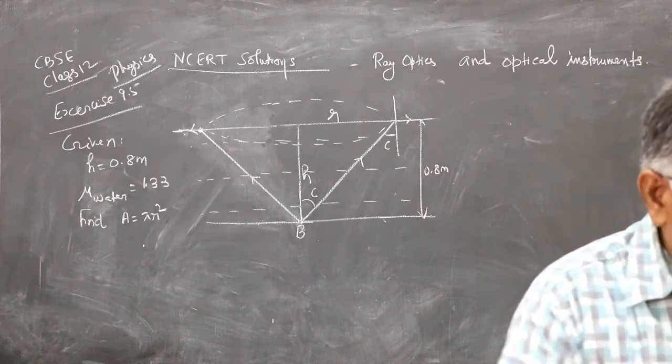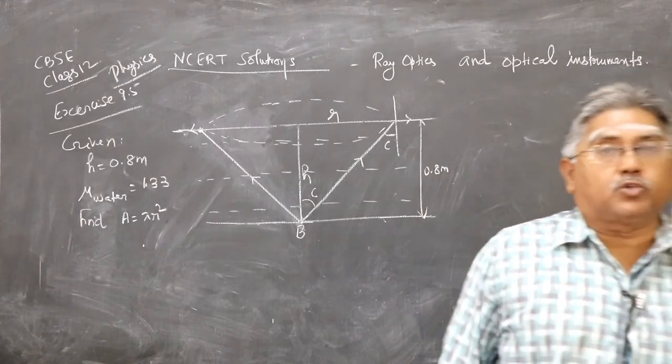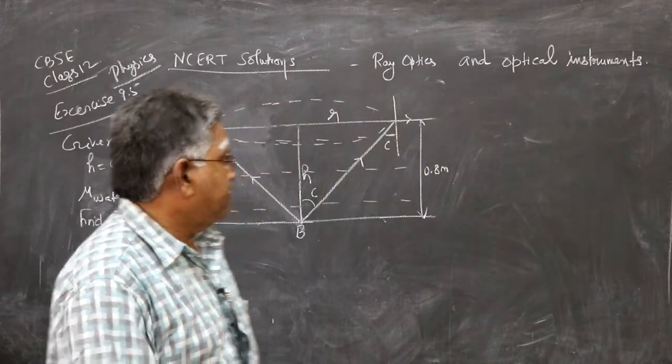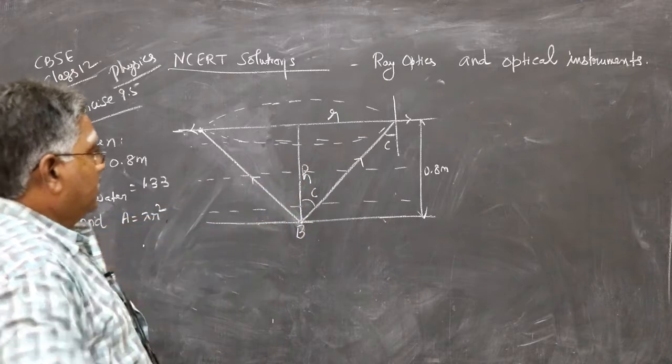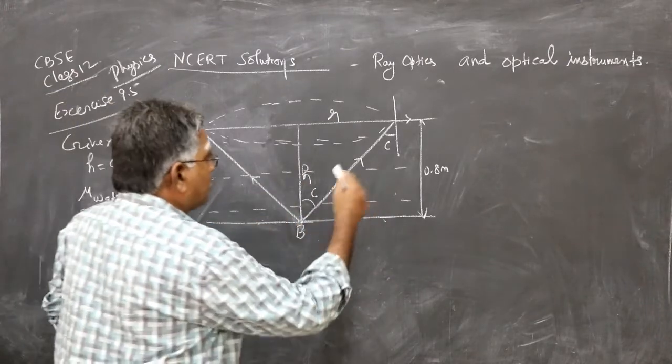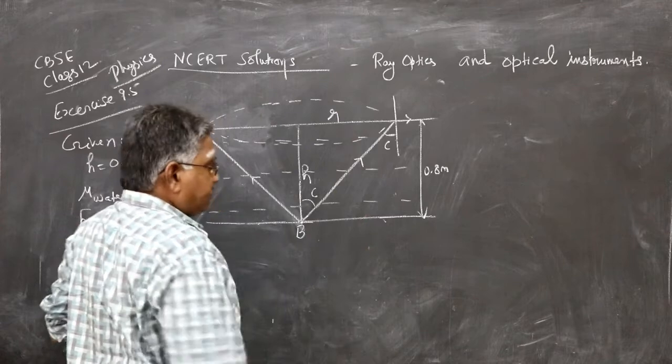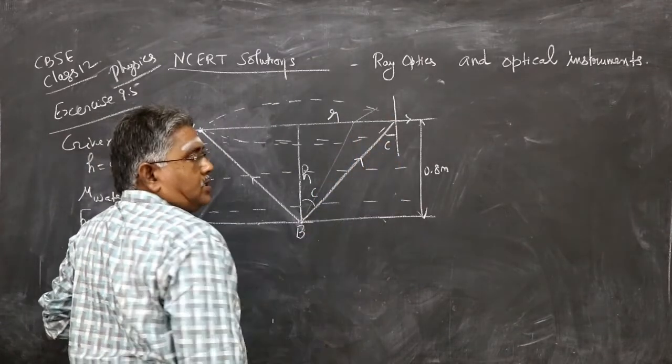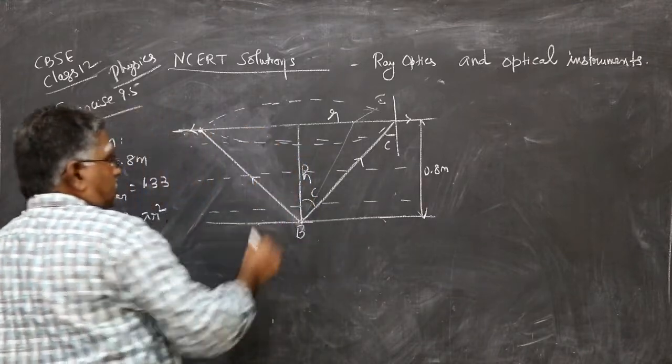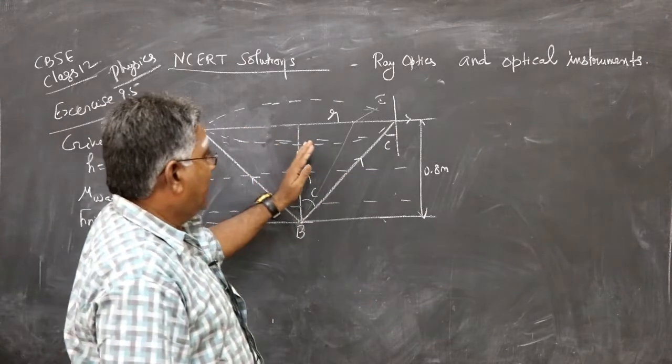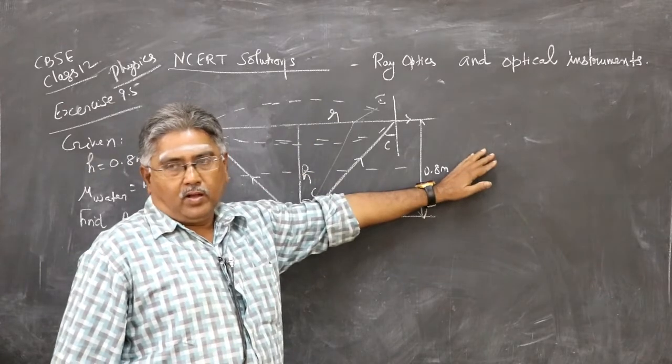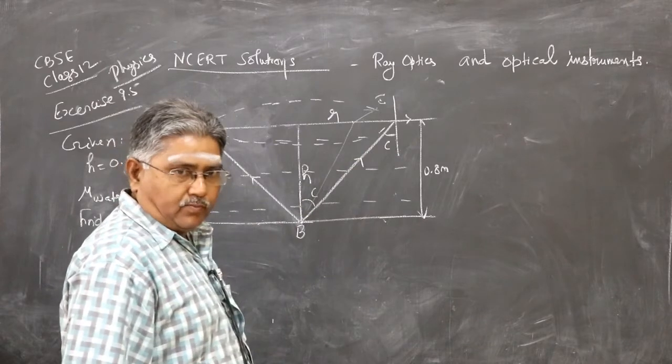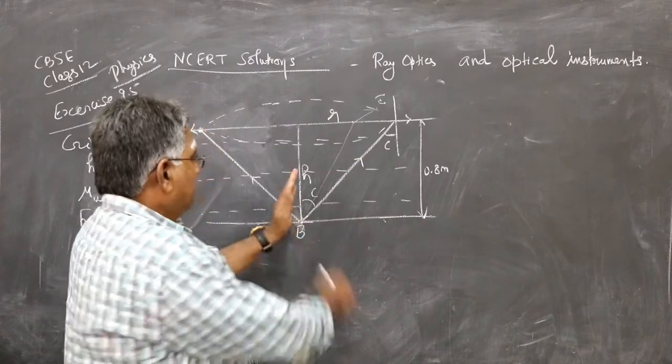Suppose if you consider a point here, the light will come out. Similarly, this side also. You can assume both sides are very symmetric. Assume the tank is extending to this side as good as this side also.